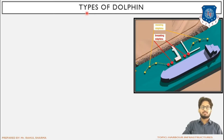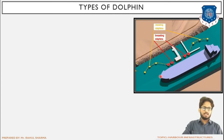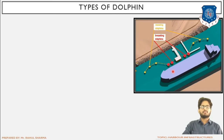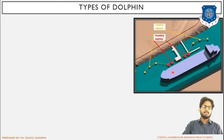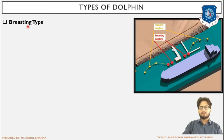Before beginning the types of dolphins, let's look at the picture. The ship which has been berthed and accommodated is shown. Next, the resting dolphins and mooring dolphins, with which the ship will be tied up, are shown along with the harbor area. These dolphins are placed in the harbor and are used for tying up the ship.